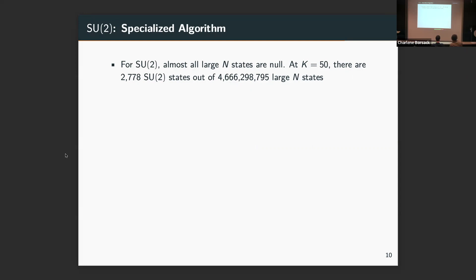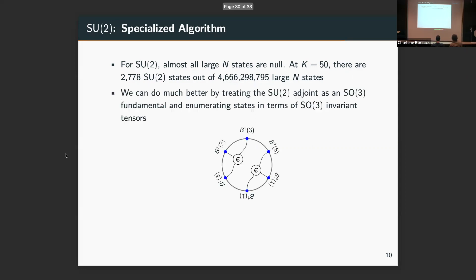SU(2) is also a nice group in which we can do this rather tractably. We can consider the SU(2) adjoint as if it were an SO(3) fundamental and then reorganize our states in terms of, rather than traces of these B daggers, we write them in terms of SO(3) invariant tensors. We get these tensor networks of epsilons connected to our creation operators. Then we can try to compute the mass squared operator, in particular the P-momentum mode, in terms of these states. It is harder but still better than working with 4 billion states. We can do this.